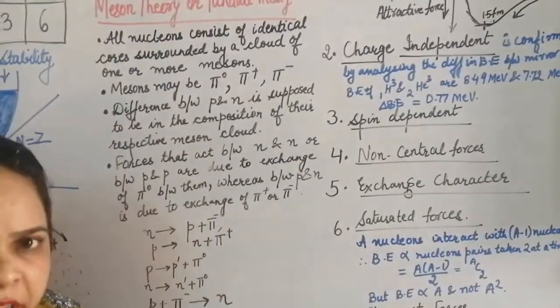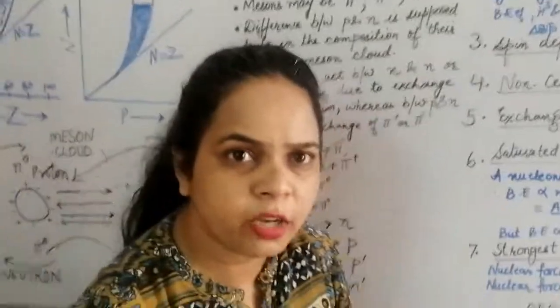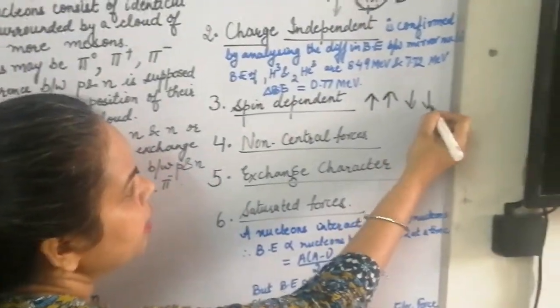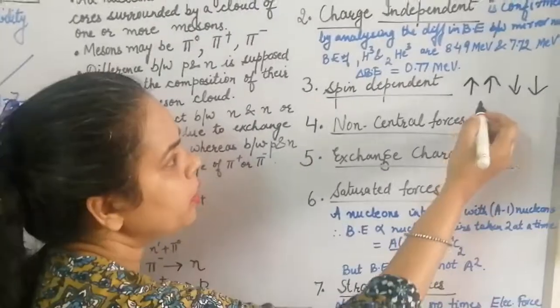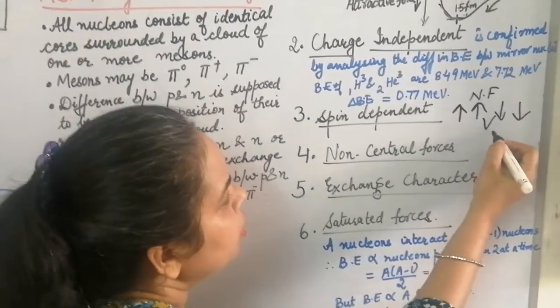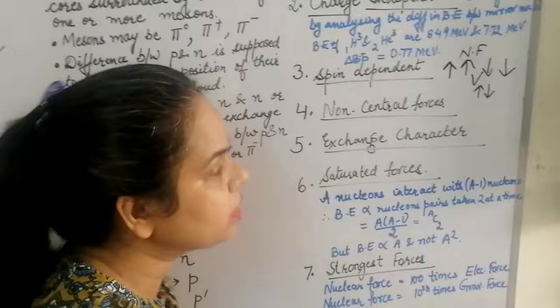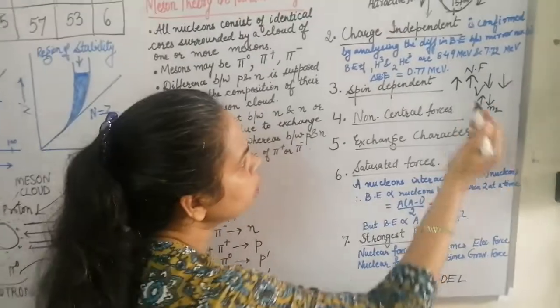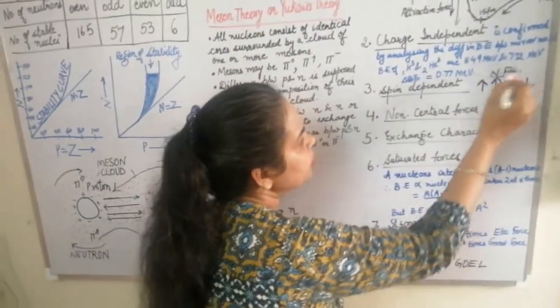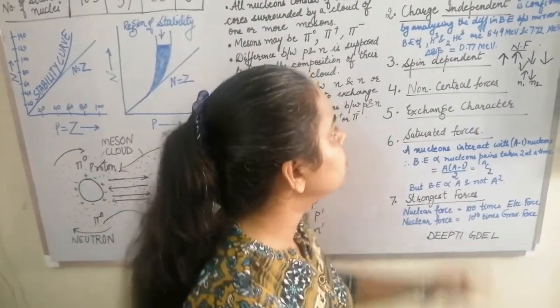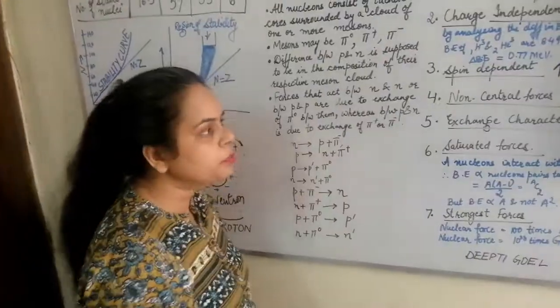The third property is that nuclear forces are spin dependent. Protons and neutrons both have spins. It was found that nuclear forces for nucleons with parallel spins — both up or both down — are greater than nuclear forces for nucleons with anti-parallel spins (one up, one down). The nuclear force for parallel spin is much greater than for anti-parallel spins.